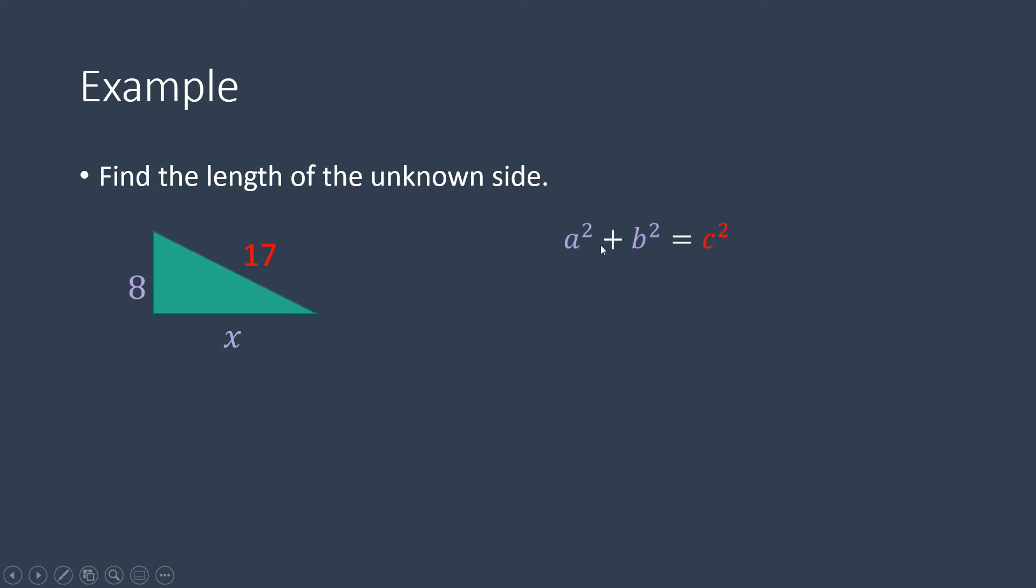So we're going to be using a squared plus b squared equals c squared. a is where you put the legs, and then c is your hypotenuse. So 8 squared plus x squared equals 17 squared.